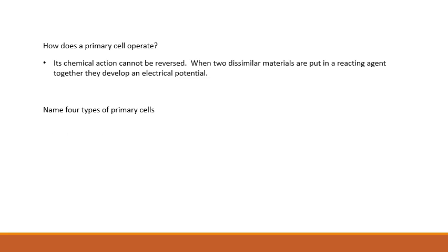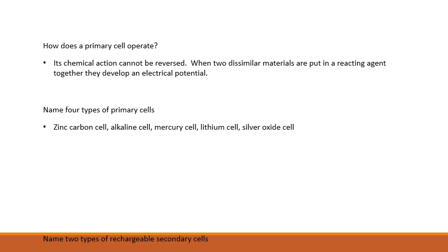Name four types of primary cells: the carbon cell, the alkaline cell, the mercury cell, the lithium cell, and the silver oxide cell.